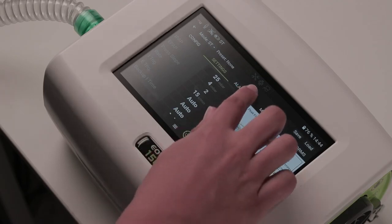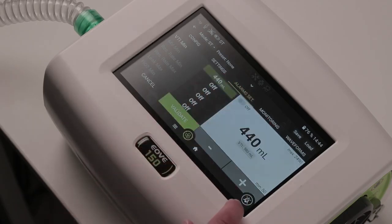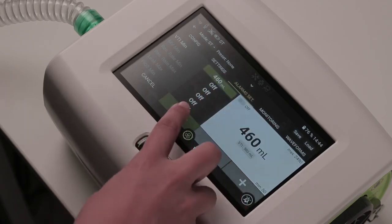From the alarms tab, you can set the alarm thresholds during the ventilation. For that, select the alarm to modify, adjust it, and validate.